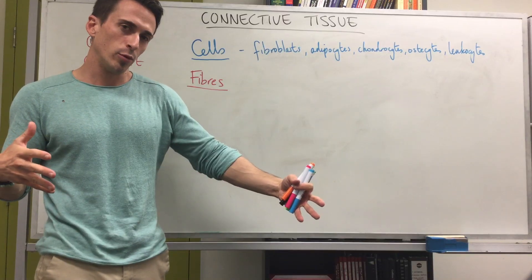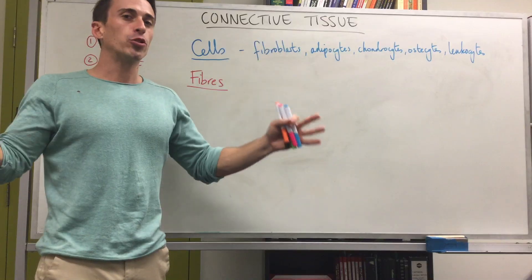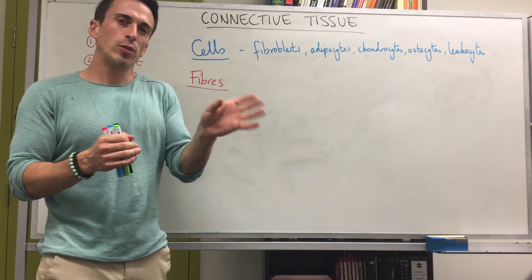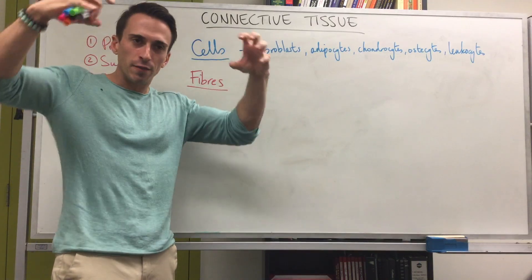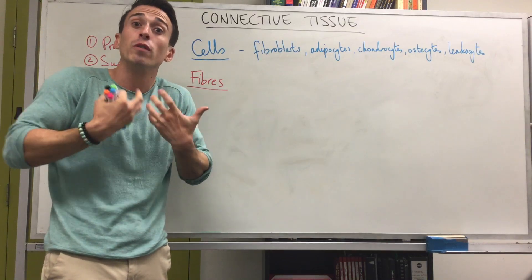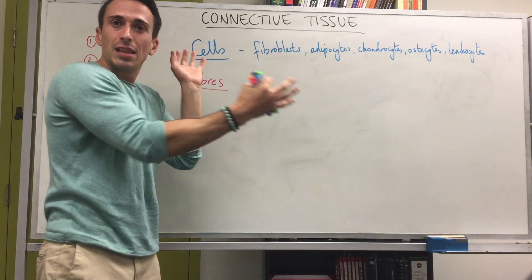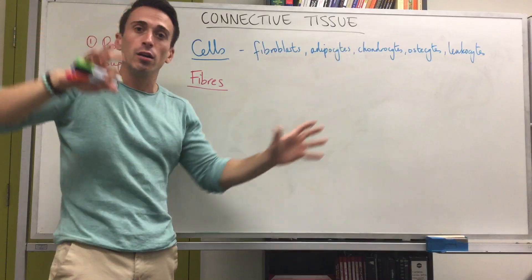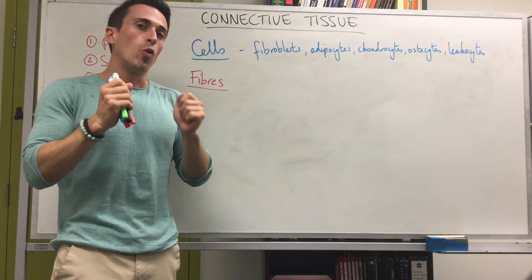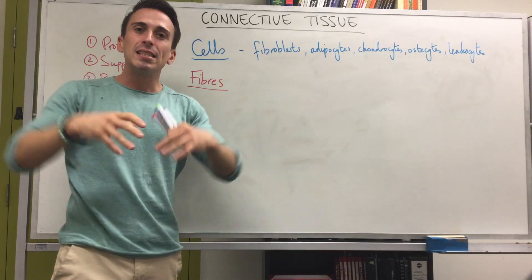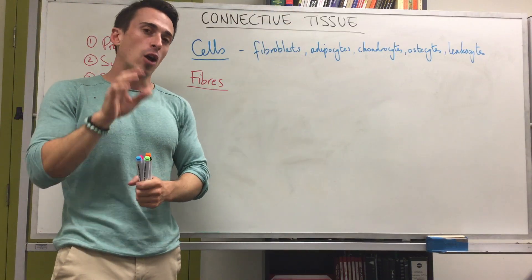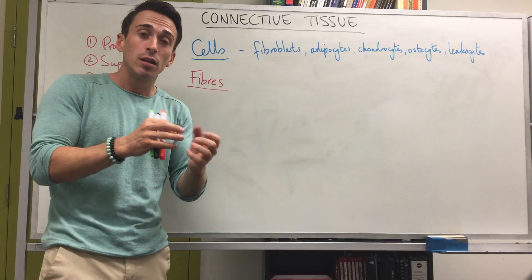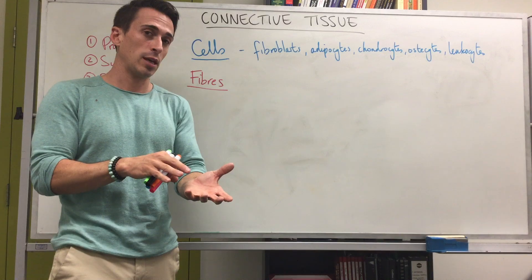The other thing that connective tissues have in common are fibers. Connective tissue is the most abundant and widely distributed tissue type, and the majority of it is the extracellular matrix. When we talk about muscular tissue, cells are tightly packed and working together, but in connective tissue the cells are actually quite widely dispersed — it's not uncommon to have a single cell sitting within all this extracellular matrix.